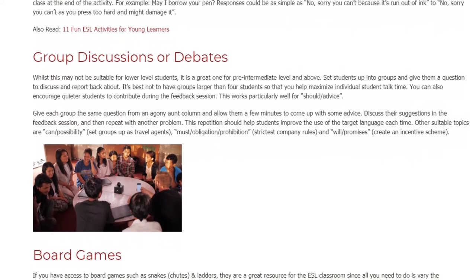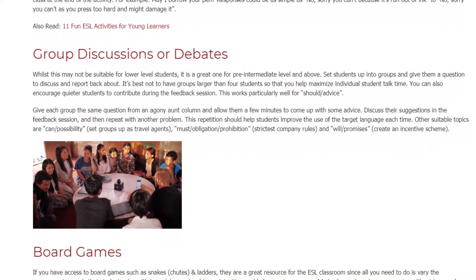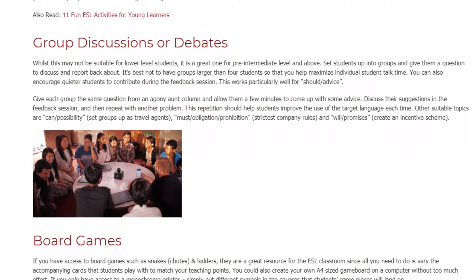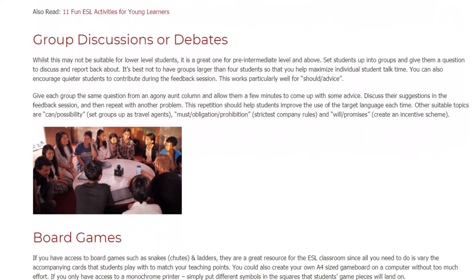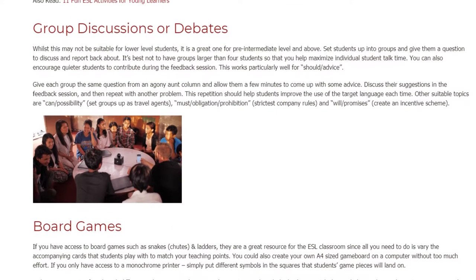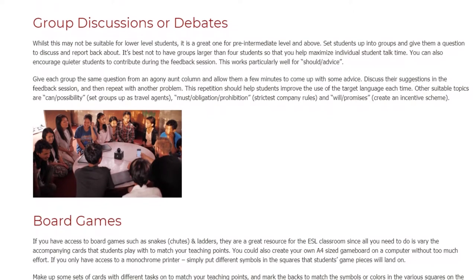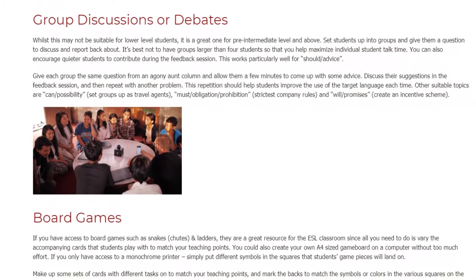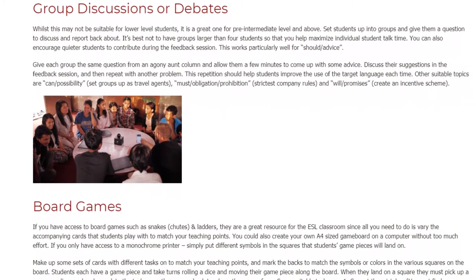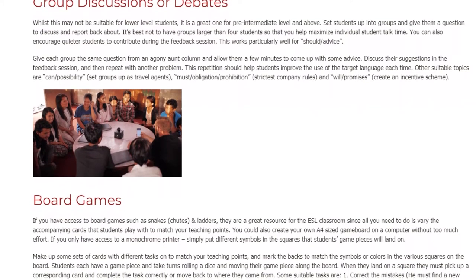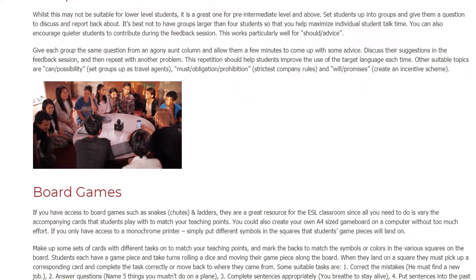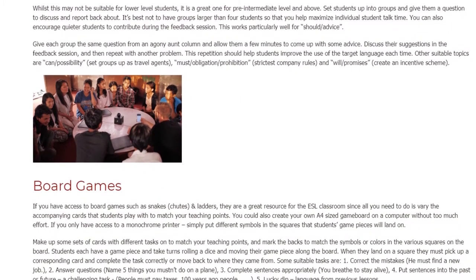Discuss their suggestions in the feedback session, and then repeat with another problem. This repetition should help students improve the use of the target language each time. Other suitable topics are: can (possibility) — set groups up as travel agents; must / obligation / prohibition — strictest company rules; and will (promises) — create an incentive scheme.